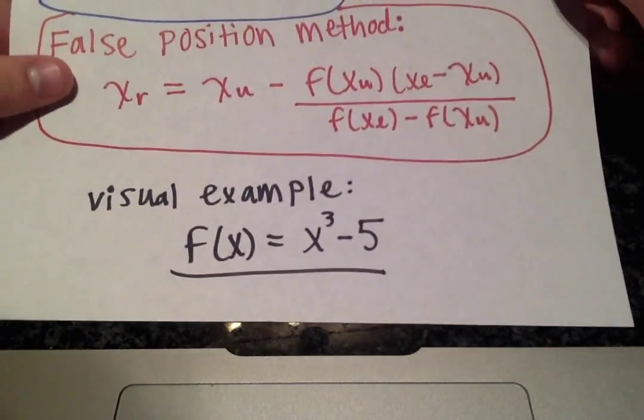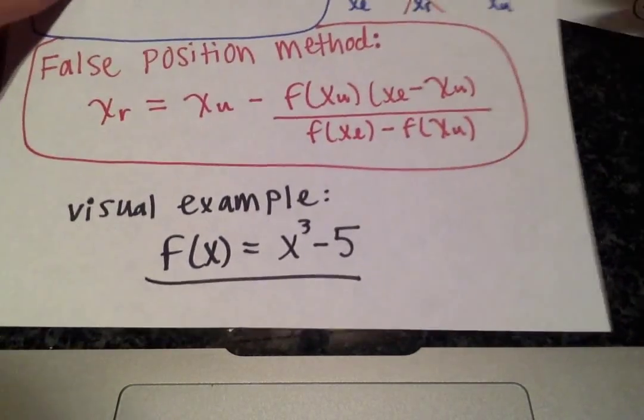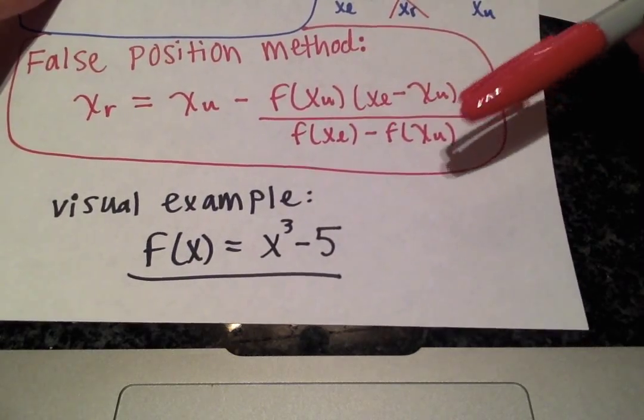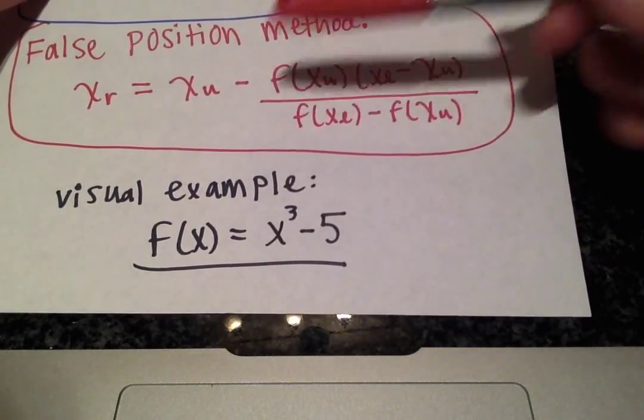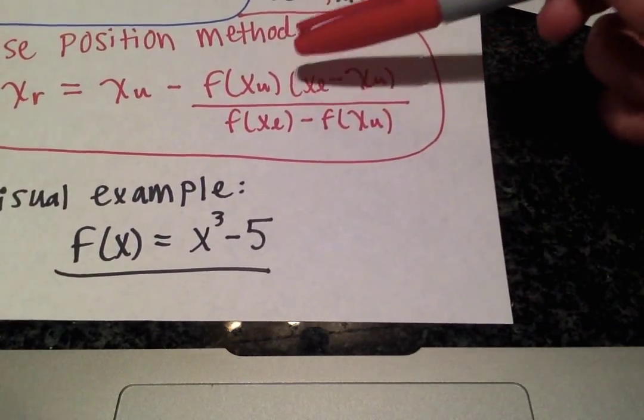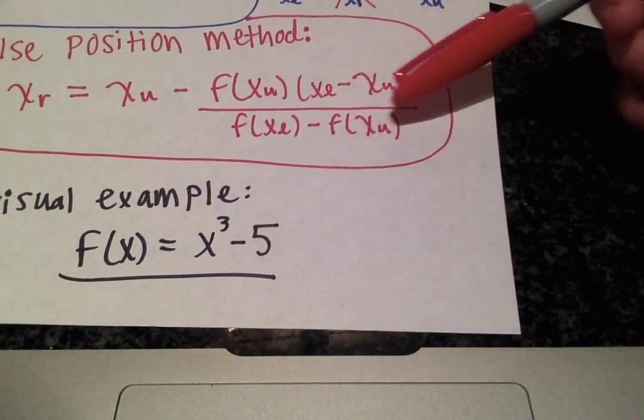So for the false position method x_r is this lengthy equation that I introduced on the last slide: x_r equals x_u minus f of x_u multiplied by x of l minus x_u all over f of x_l minus f of x_u.